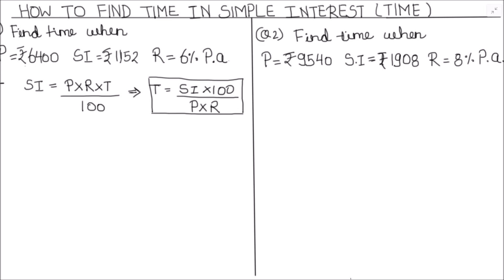In the first question we have been given a principle amount of 6400, simple interest is 1152, and rate of interest is 6% per annum. Per annum means per year. So let's substitute these values.